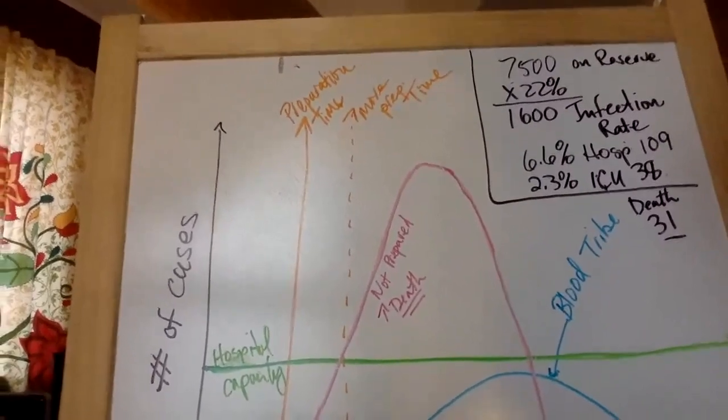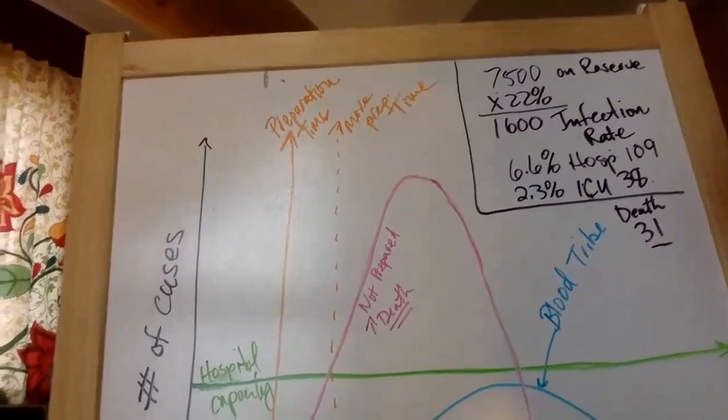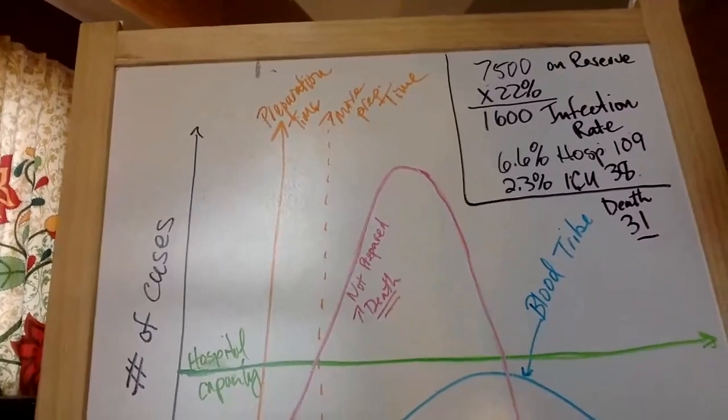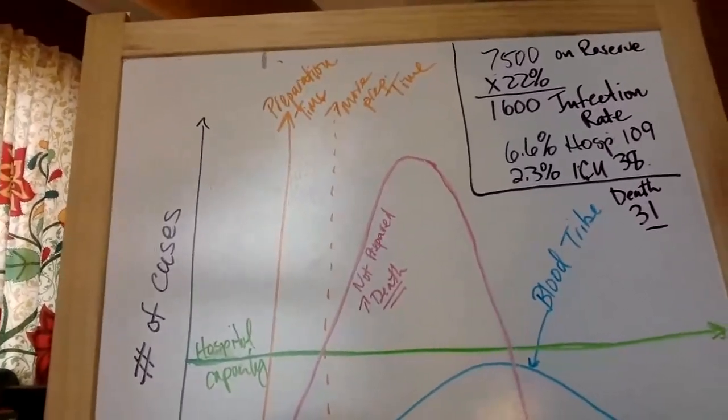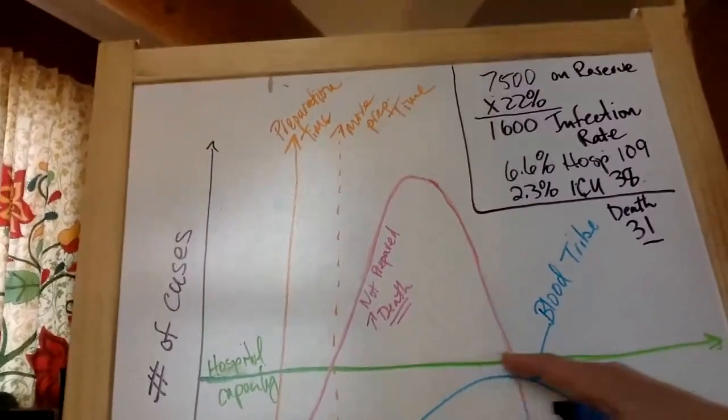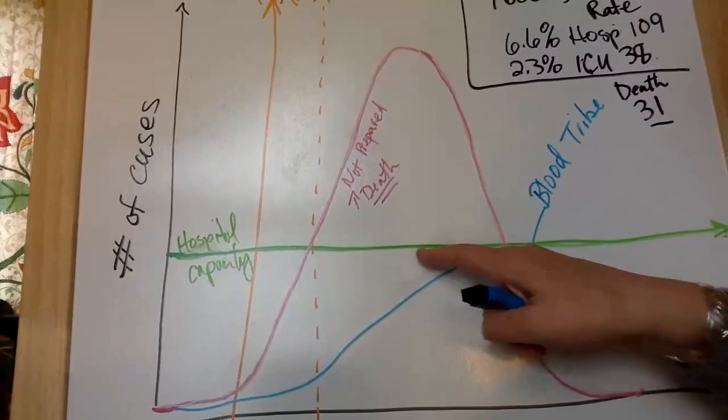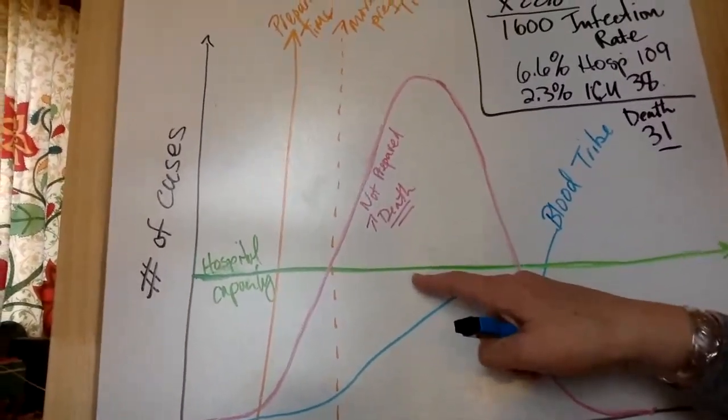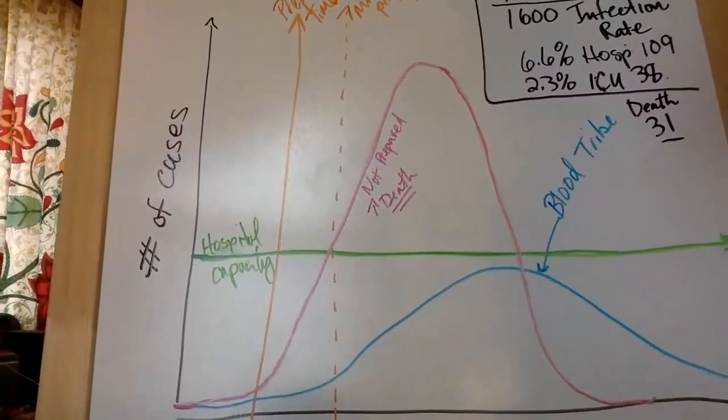So this would be the situation in an area like New York City or the people that are not well prepared for the COVID crisis. And this would be a community that is prepared where the slope or the surge is much slower and it doesn't override the capacity of the hospital. So what we want to do is we want to stay within that so that we do not have the situation where we have no hospital beds and no hospital care.